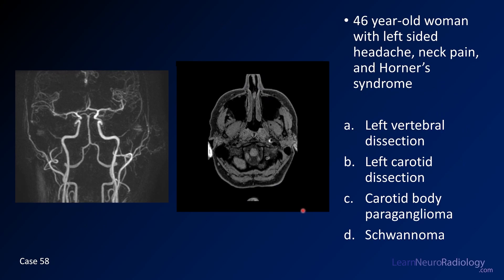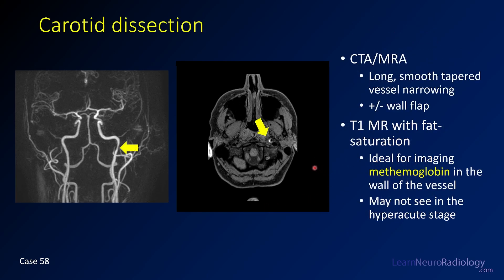Case number 58 is a 46-year-old woman with left-sided headache, neck pain, and Horner syndrome. Images include a MIP from an MRA and an MR image through the neck. Choices are left vertebral dissection, left carotid dissection, carotid body paraganglioma, or schwannoma. This is left carotid dissection. The key image is a fat-saturated T1, which is the gold standard for neck dissections — it shows crescent-shaped methemoglobin in the vessel wall. There is also mild tapering on MRA. The left vertebral artery is normal, and masses would appear more rounded.